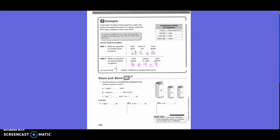Use the picture to complete the statement. Convert three quarts to pints. One quart equals how many pints? Two. One quart is greater than one pint. So now we need to decide are we doing multiplication or division? Multiplication. We said two, right? So three quarts times two pints equals six pints.